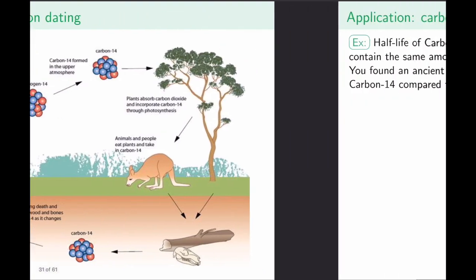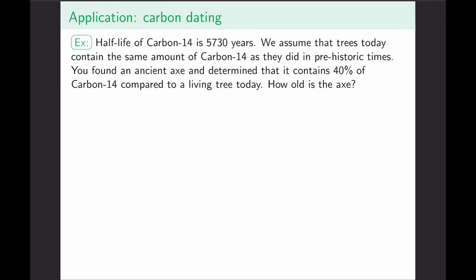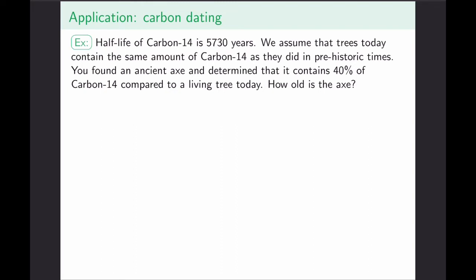Carbon dating has its limitations, which we'll discuss shortly. The half-life of carbon-14 is 5,730 years. We assume that trees today have the same amount of carbon-14 as they did in prehistoric times. We found an ancient axe that contains only 40% of the carbon-14 compared to a living tree, meaning 60% has already turned into nitrogen-14. We want to determine the age of the axe. Carbon-14 breaks down exponentially according to the decay model: p(t) equals p-naught times e to the power of kt, where k is negative.